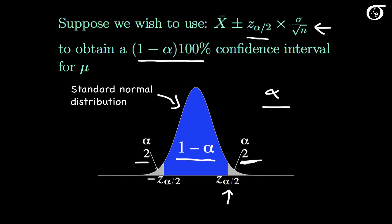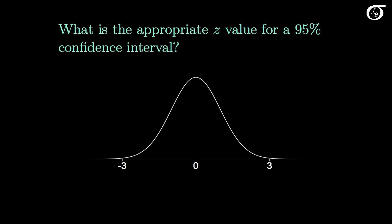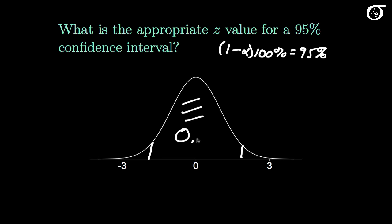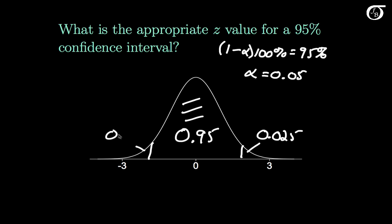Let's look at a specific example. What is the appropriate z value for a 95% confidence interval? Here, 1-alpha times 100% equals 95%, so we put 95% of the area — 0.95 — in the middle. Alpha, the remaining area, is 0.05. We split that evenly into the two tails, putting an area of 0.025 in the right tail and 0.025 in the left tail. We need to find the value that has an area of 0.025 to the right under the standard normal curve.